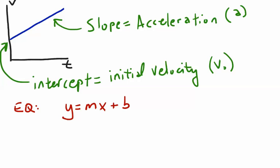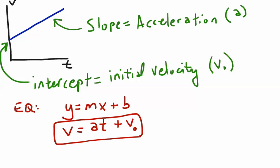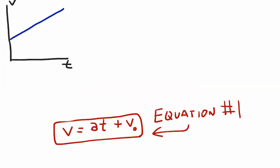The equation of a line is y equals mx plus b. For this graph, we don't have a y and an x — we have a v and a t. So this equation looks like v equals a times t plus v-naught, where a is the slope and v-naught is the intercept. This equation, v equals at plus v-naught, is equation number one of our kinematics equations.